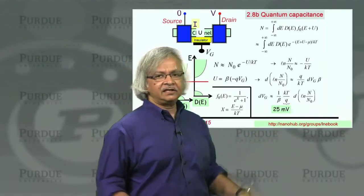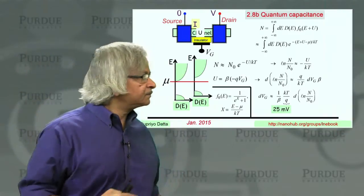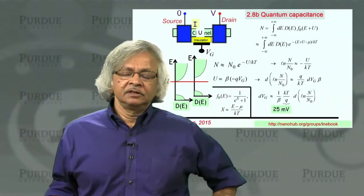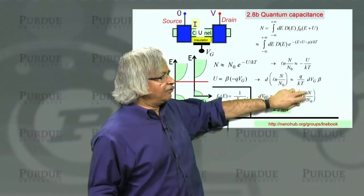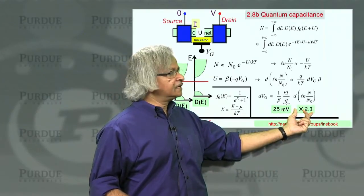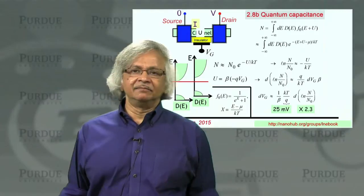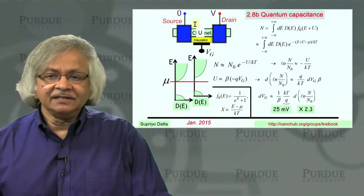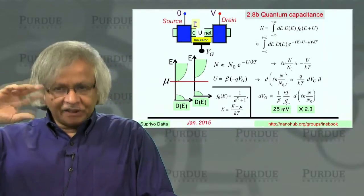We can write the change in the logarithm of n over n0 as equal to the change in U divided by kT, which is beta times the change in q times Vg, then divided by kT. So we can express the change in electron density in terms of the change in Vg. Here you have kT over q — kT is 25 millielectron volts, so kT over q is 25 millivolts. Supposing we want to know how much gate voltage is needed to change the electron density by a factor of 10. Natural log of 10 is approximately 2.3, so the voltage needed is 25 millivolts times 2.3, which is approximately 60 millivolts.